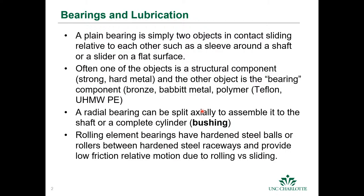A bearing is pretty simply defined. It's when you have two objects that are in contact with each other — it could be a sleeve around a round shaft or a slider on a flat surface. Those are plain bearings, basically just two objects that have relative velocity between them that are in contact. Often one of the objects is a structural component, usually a strong hard metal that's part of the structure of the machine or transmits torque, like a shaft.